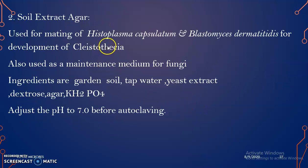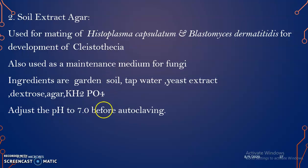The second sporulation medium is soil extract agar. It is used for the mating of Histoplasma capsulatum and Blastomyces dermatitidis for the development of fruiting body, again cleistothecia. It is also used for the maintenance of fungus. The ingredients are garden soil, tap water, yeast extract, dextrose, agar, and potassium dihydrogen phosphate. The pH is 7 and must be adjusted before autoclaving.